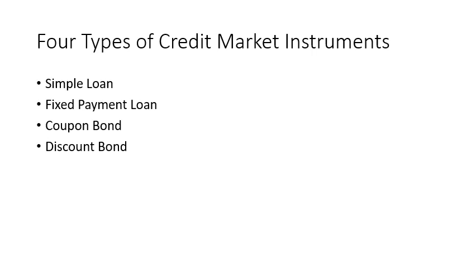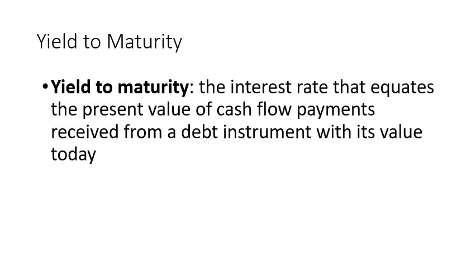In the credit market there are four different types of instruments: simple loan, fixed payment loan, coupon bond, and discount bond. For yield to maturity, this is the interest rate that equates the present value of cash flow payments received from a debt instrument with its value today. This means it is the interest rate that makes the future cash flow present value exactly equal to the present value today for this loan.